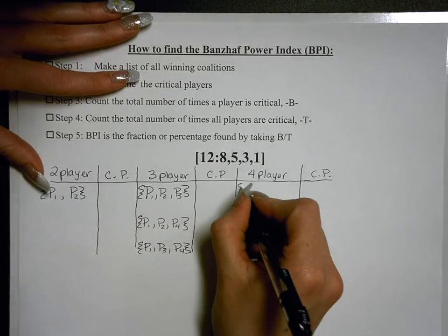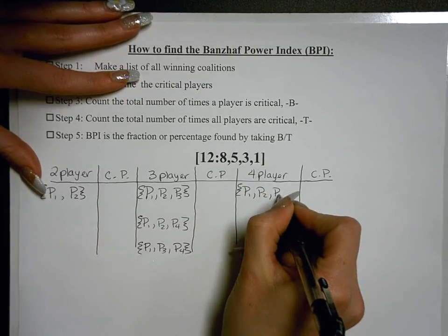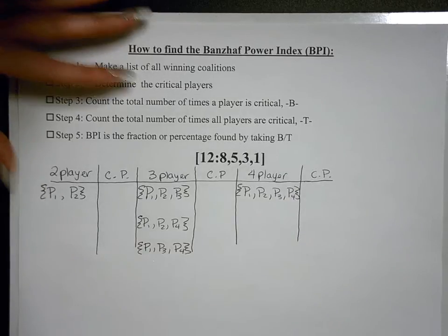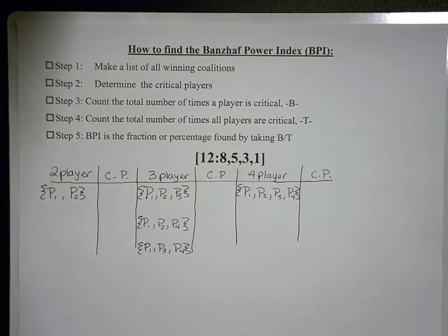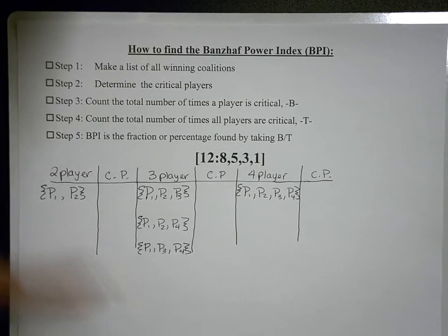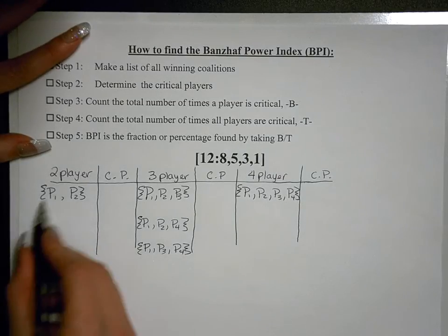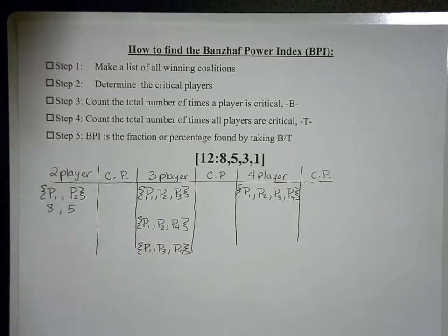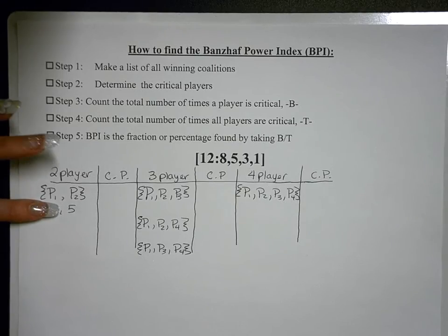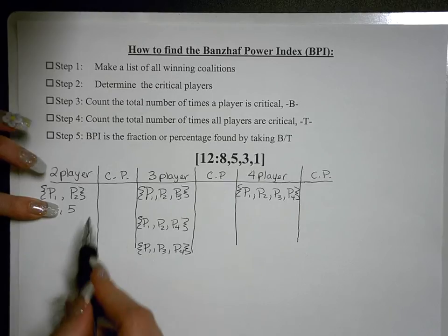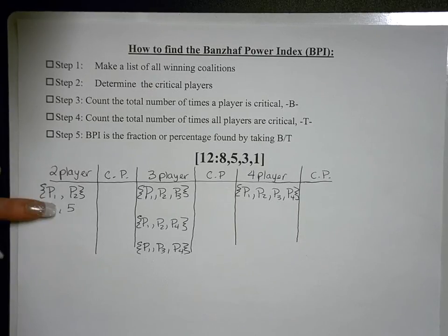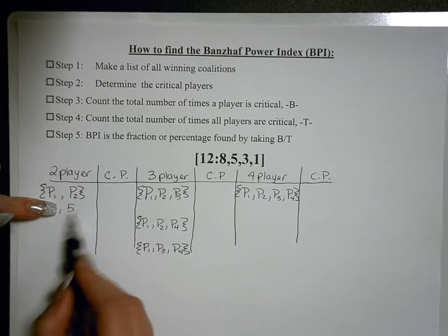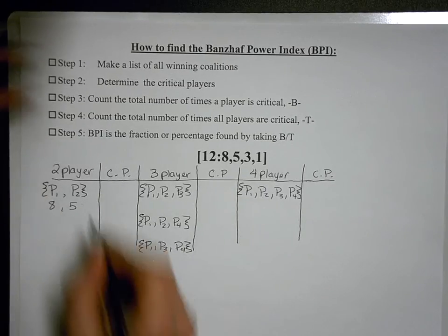Next we write all four-player winning coalitions — that's all four players together. Now we've made a list of all the winning coalitions. The next step is to determine the critical players. A player is critical if, when they leave a winning coalition, there are no longer enough votes to pass a motion. In the two-player coalition of player one and player two, if player one's eight votes leave, only five remain — not enough to pass. Therefore player one is critical.